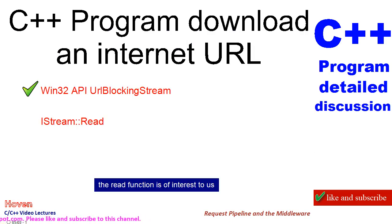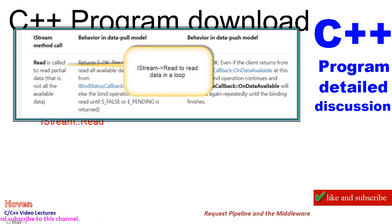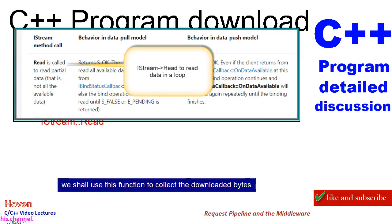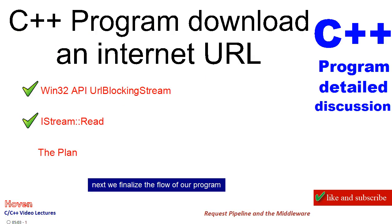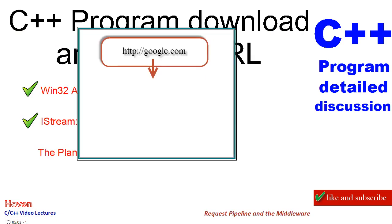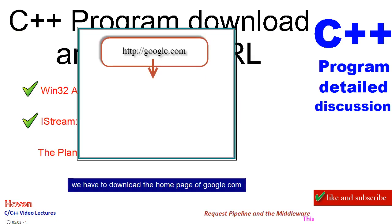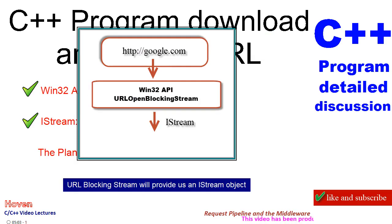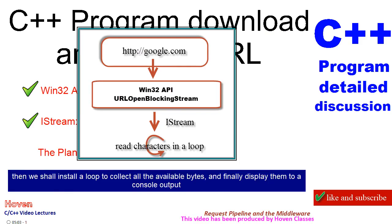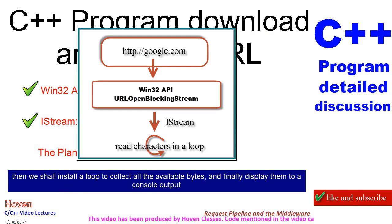The Read function is of interest to us. We shall use this function to collect the downloaded bytes. Next, we finalize the flow of our program: we have to download the homepage of google.com. URLOpenBlockingStream will provide us an IStream object, then we shall install a loop to collect all the available bytes and finally display them to a console output.